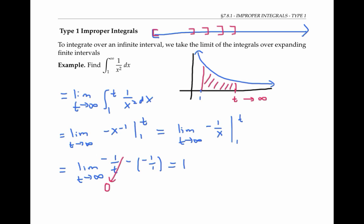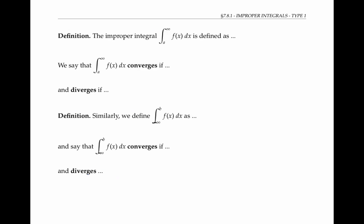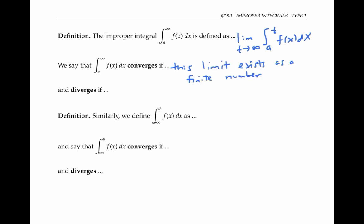In this situation, we say that the improper integral converges. In general, the improper integral from some finite number a to infinity of f of x dx is defined as the limit as t goes to infinity of the integral from a to t of f of x dx. We say the integral converges if this limit exists as a finite number, and we say the integral diverges if the limit is infinity, negative infinity, or if it doesn't exist.